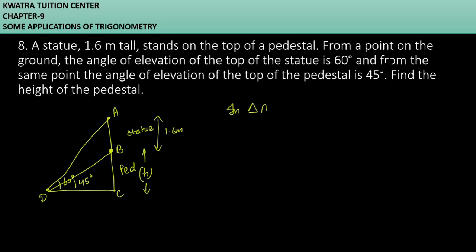First of all, the right angle triangle is ADC, the bigger one. Which angle we will use? Tan. Tan 60 equals perpendicular divided by base. Perpendicular is 1.6 plus H, the complete value AC, divided by base DC.